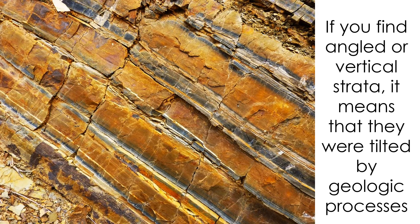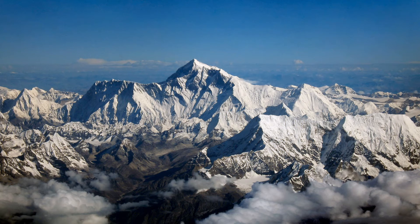Of course, not all strata are horizontal. Some occur at angles or are perpendicular to the ground. If you find angled or vertical strata, it means that they were tilted by geologic processes after they formed. Strata are often tilted, folded, and distorted by the geologic processes that create mountains. We call these processes tectonic processes because they are caused by the collision of tectonic plates.